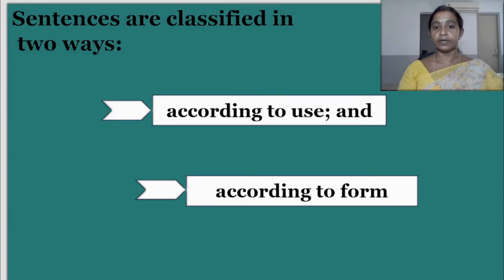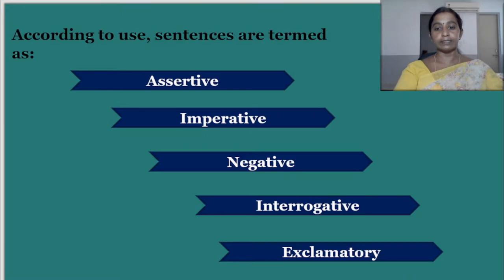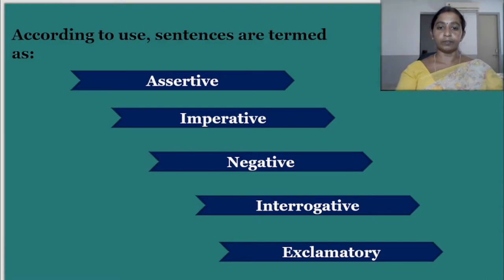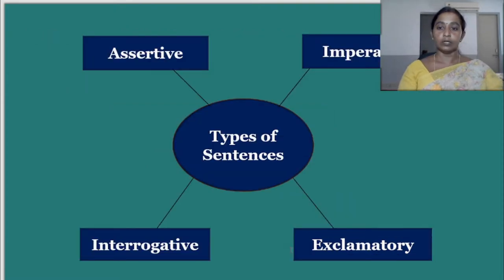Sentences are classified in two ways: one is according to use and according to form. There are different types of sentences: assertive sentence, imperative sentence, negative sentence, interrogative sentence, and exclamatory sentence. Today I shall deal with four sentences — assertive, imperative, interrogative, and exclamatory sentences.